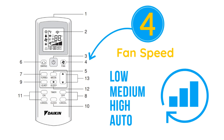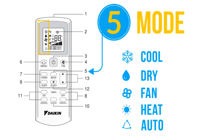Operation mode will decide the use of Daikin AC for heating, cooling, or other functions. To select an operation mode, press the mode button to toggle between modes.